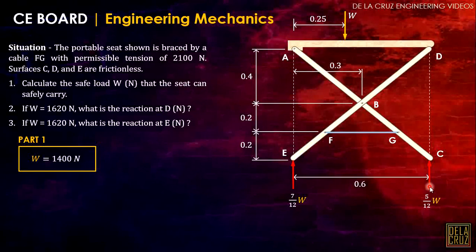For number two, if W is 1620 newtons, what is the reaction at D? The reaction of D is the same as shown in the free body diagram. So for part two, the reaction of D is just 5 over 12. Now the W here is 1620. Take note, this is from part one; this one is for part two, 1620. So the answer is 675 newtons.